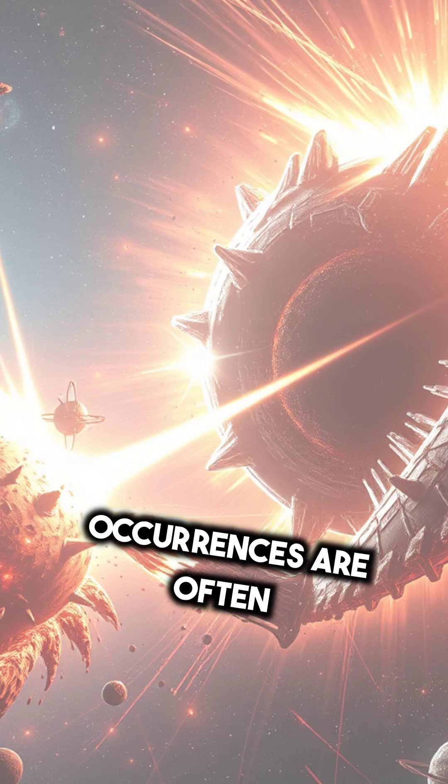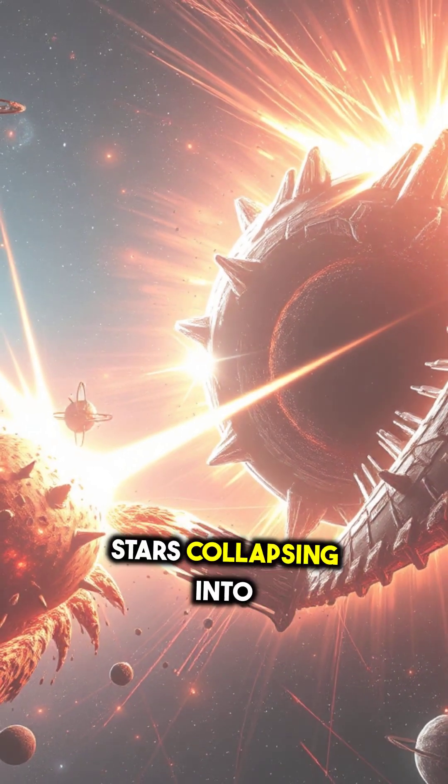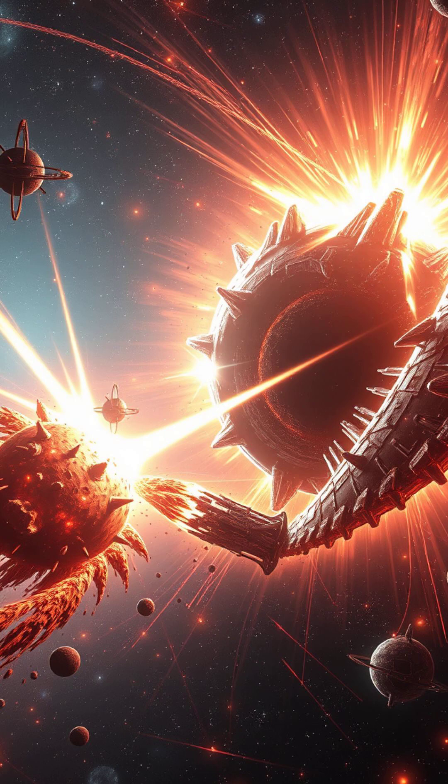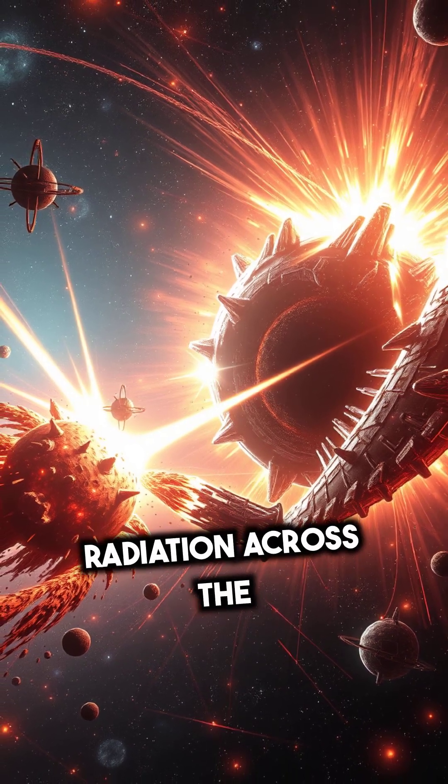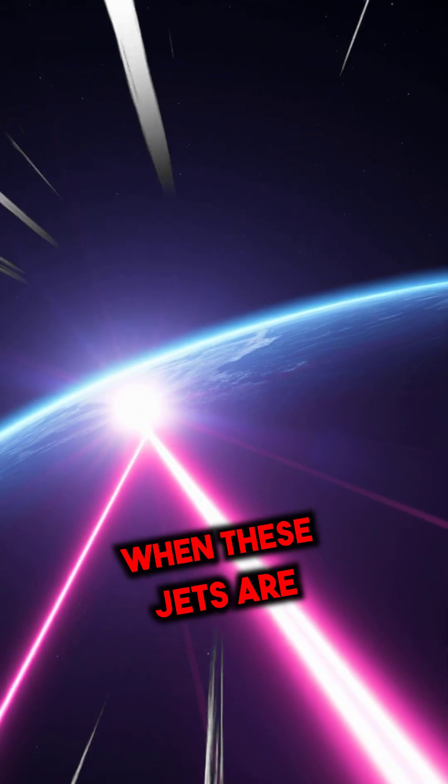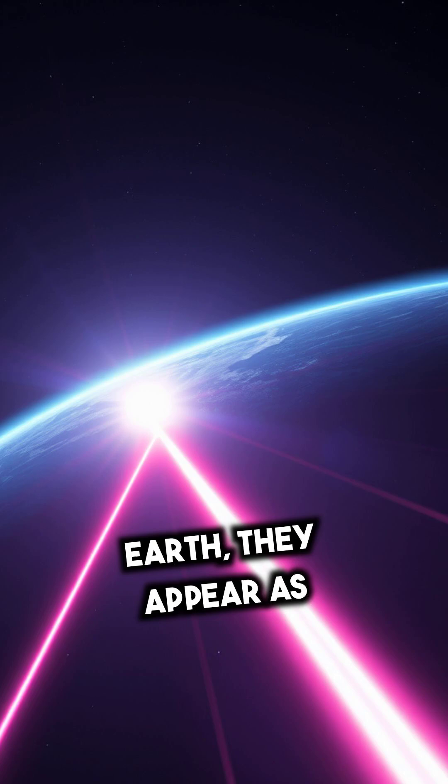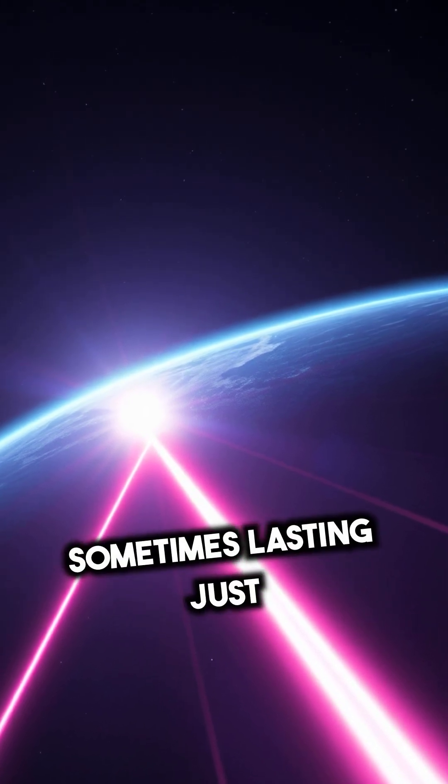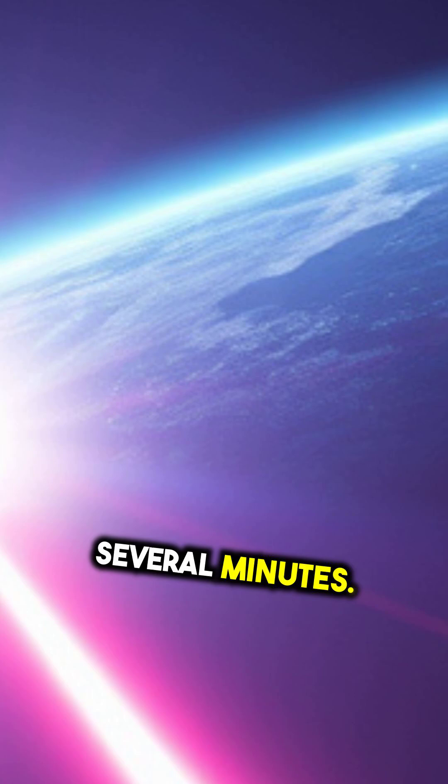These cataclysmic occurrences are often the result of massive stars collapsing into black holes or neutron stars merging, sending intense jets of radiation across the cosmos. When these jets are pointed directly at Earth, they appear as a brief yet incredibly bright flash, sometimes lasting just milliseconds or up to several minutes.